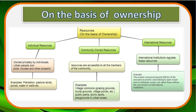The next classification is on the basis of ownership, divided into four categories: individual resources, community-owned resources, national resources, and international resources. Individual resources are privately owned by people, for example plots, houses, private wells, or farming land. Community-owned resources are owned by members of a community or a group, for example a village common well, picnic spots, graveyards, and playgrounds.